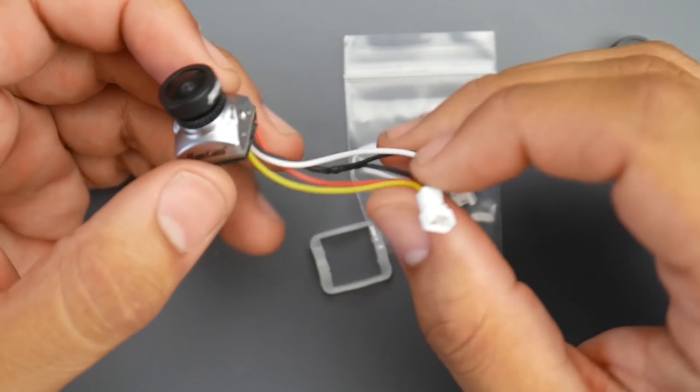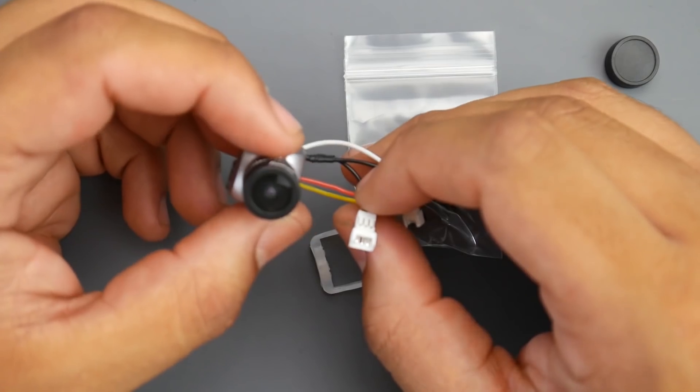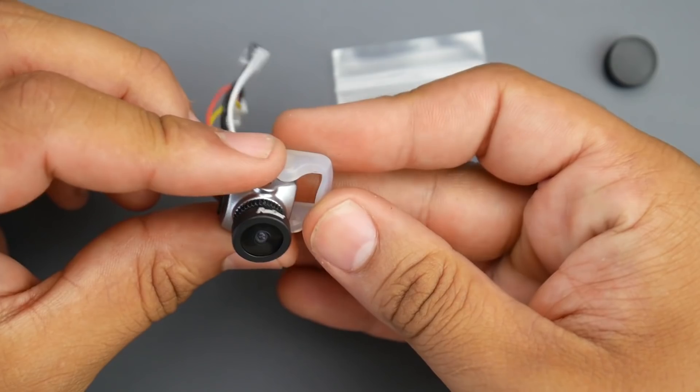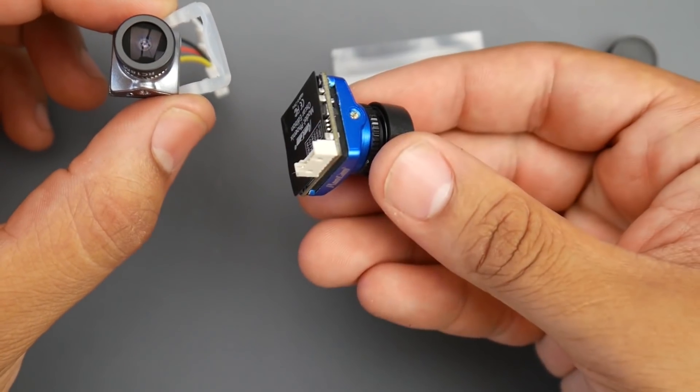It does have an OSD option and it takes 5 volts only, so keep that in mind. They do provide you with a little adapter or bracket, so if you wanted to change its size into basically a micro, you can install it on a bigger quadcopter. They provide you with the screws needed.